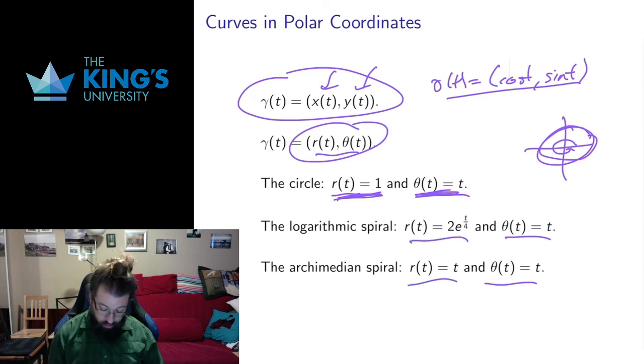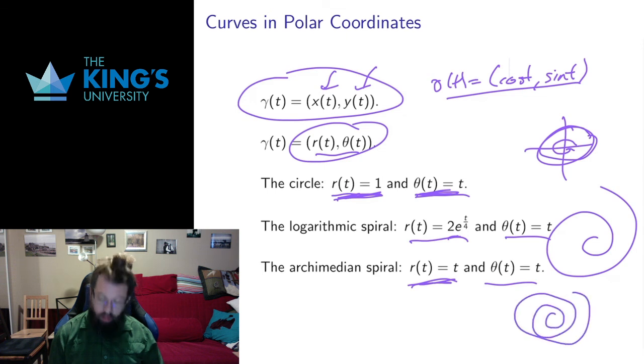And the same way I can do spirals, because the spirals have the same angle just going around and around, but now the radius is changing, and it's changing by some monotonic function. So the logarithmic spiral is a radius which is increasing, so that gives me my logarithmic spiral. Here's a radius that's increasing linearly, that gives me my Archimedean spiral.